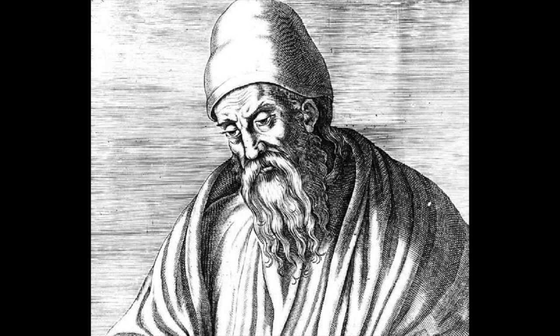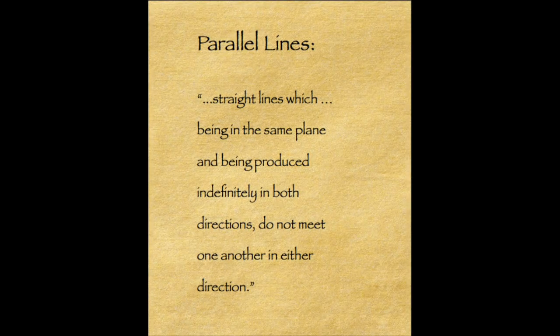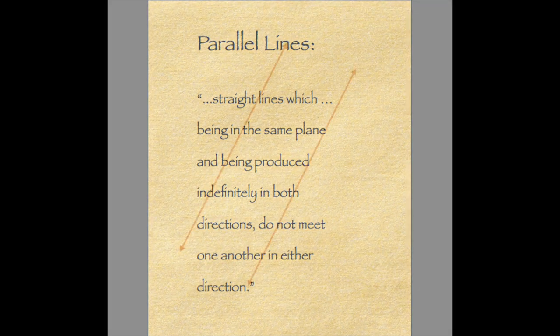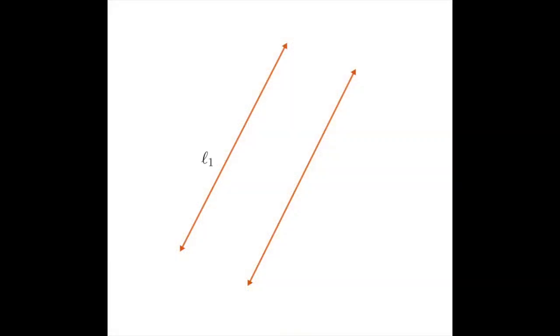Euclid, the father of geometry, defined parallel lines as straight lines which, being in the same plane and being produced indefinitely in both directions, do not meet one another in either direction. Let's take two parallel lines in the Euclidean plane and call them L1 and L2. By definition, they will always be separated by the same distance x. So no matter how far you extend these lines, they will never meet.